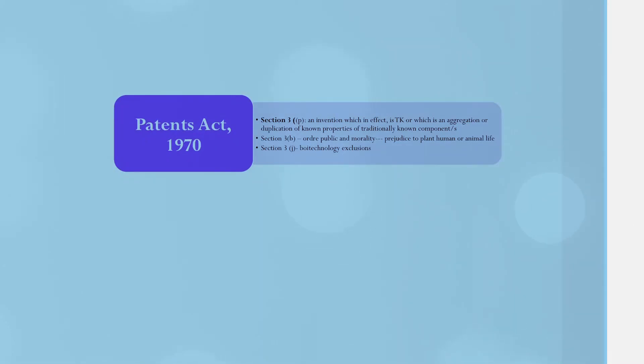It is very interesting to see what happens when the novelty aspect, the inventive step aspect, and industrial application — the three criteria that constitute an invention — are qualified, and yet Section 3(p) would exclude certain inventions primarily because they represent aggregation or duplication of known properties of traditionally known components. It becomes important that you not only have a layer of subject matter exclusion, but also a higher level of patentability thresholds to prevent misappropriation. Section 3(b), similar to TRIPS Article 27.2, provides that patents may not be granted on inventions whose commercial exploitation leads to public morality concerns or causes serious prejudice to plant, animal, or human life.